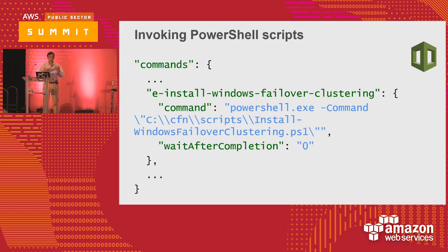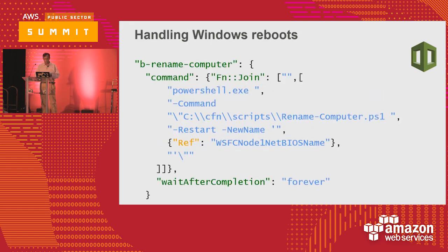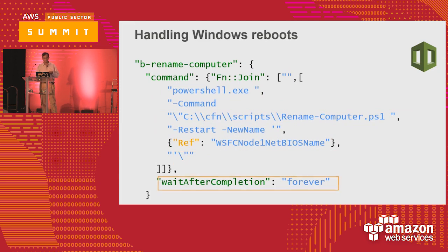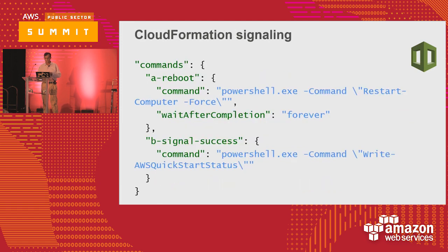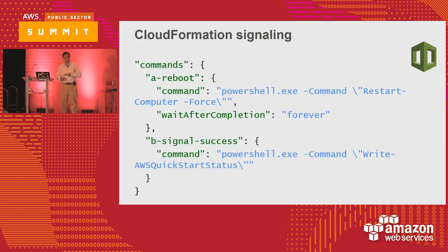Similarly, renaming a Windows instance requires a reboot. Look at how the command for renaming it is waiting forever before the reboot completes, then it can go to the next step. In combination, you can say 'wait forever' and then see the signal for success — once successful, you do the next step. This is a combination you can use within your CloudFormation template. In general it will run all commands in parallel, but you can make it wait because you know there would be a reboot required, so you can wait for a wait signal, and then it will start from that point down.